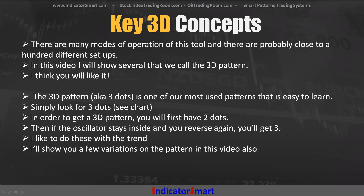There are probably close to a hundred different setups we've developed over these seven years. In this video I'm going to show you one that we call the 3D pattern — also known as three dots. This is one of our early patterns developed with the tool and we've been using it all these years. You simply look for three dots on the chart. In order to get a 3D pattern, you first have two dots, and then if the oscillator stays inside and you reverse again, you get three dots. So you know it's happening way before it actually happens — that sequencing is a super big deal.